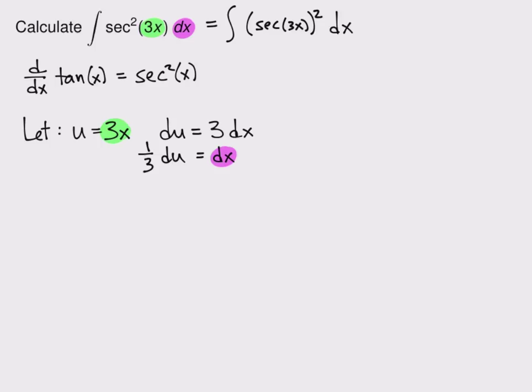So let's write this integral out from scratch. So here's the very first thing I have, the integral of secant squared 3x dx. I'm going to replace everything with a u or a du, so that there's no x's left.